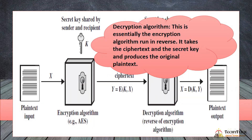Decryption Algorithm: This is essentially the encryption algorithm run in reverse — it is just the opposite of encryption. It takes the ciphertext and the secret key and produces the original plain text.